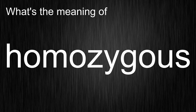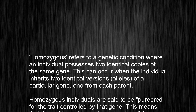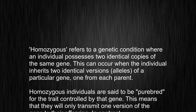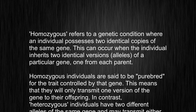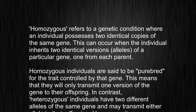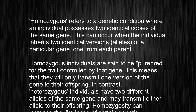Meaning of homozygous. Homozygous refers to a genetic condition where an individual possesses two identical copies of the same gene. This can occur when the individual inherits two identical versions, alleles, of a particular gene, one from each parent.